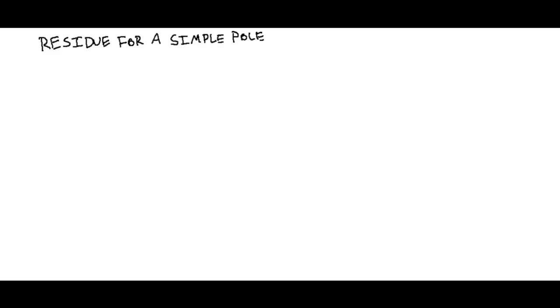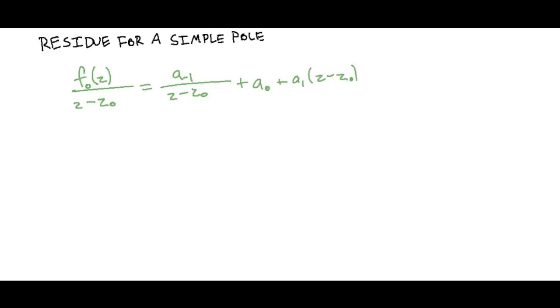Now then, how exactly do we extract this term from the function? We can do it one way for a residue of a simple pole, and then another similar way for a residue of a higher-order pole. I'm going to write out the Laurent series of a function for a simple pole, which usually means it has a z to the first in the denominator. This function f₀ is simply our original function without the pole, and we write it over our pole to make it easier to see. This function is equal to a sub −1 over (z − z₀), plus a₀, plus a₁ times (z − z₀), plus a₂ times (z − z₀) squared, and on and on to infinity.